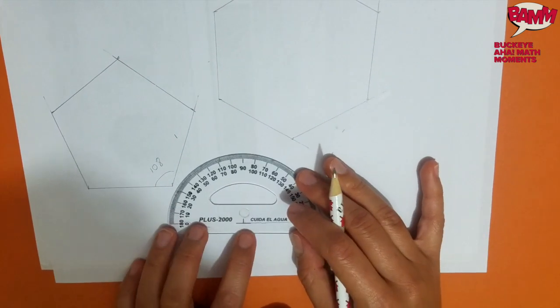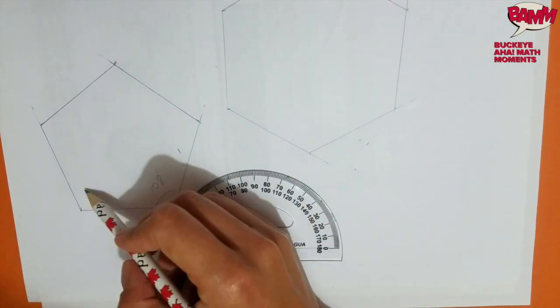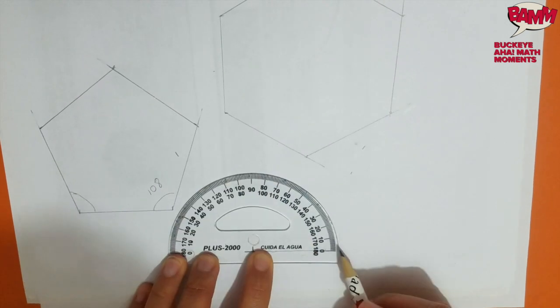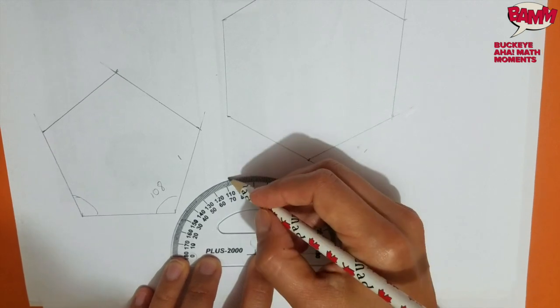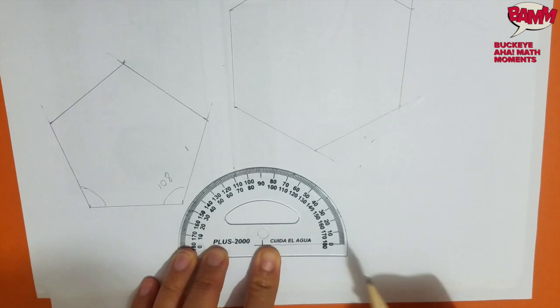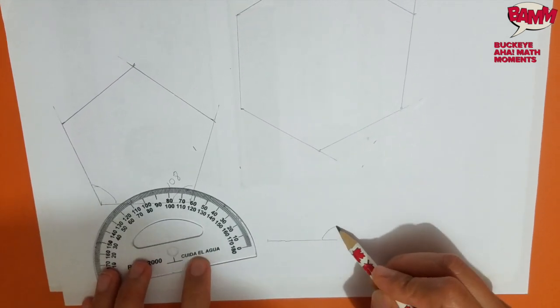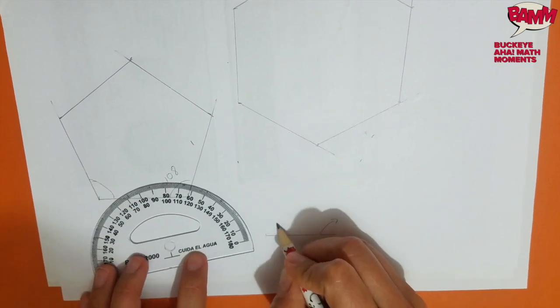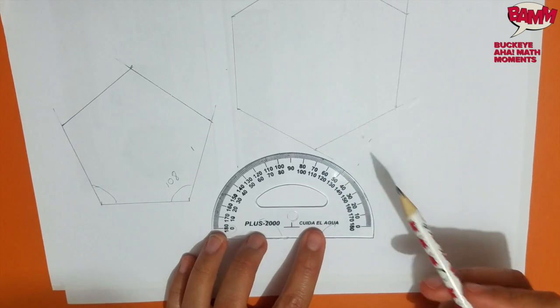Whereas if I'm measuring on the other side, then I want the angle to be measured from here, because it is this angle. And so I'm looking for 108 on this side. So now I'm looking at the outer numbers. So just be mindful of that and remember that you want to measure the angle towards here on this side and towards here on this side, and use the inner or the outer numbers accordingly.